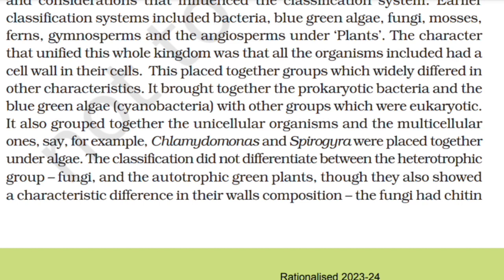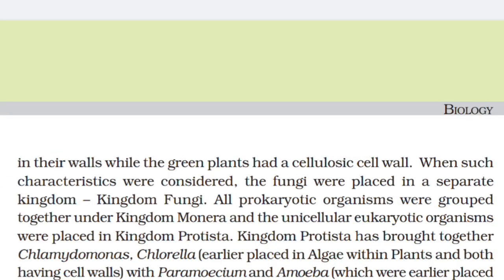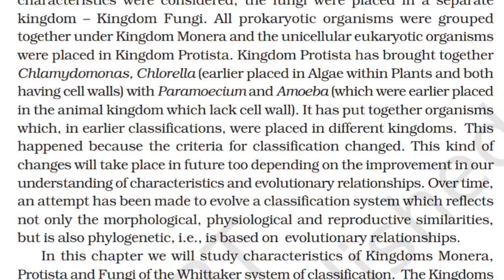The classification did not differentiate between the heterotrophic group fungi and the autotrophic green plants, though they also showed differences in wall composition — fungi had chitin in their walls while green plants had a cellulosic cell wall. When such characteristics are considered, fungi were placed in a separate kingdom. Prokaryotic organisms were grouped under kingdom Monera and unicellular eukaryotic organisms were placed in kingdom Protista. Kingdom Protista brought together Chlamydomonas and Chlorella with Paramecium and Amoeba, placing organisms that earlier classifications had put in different kingdoms together. This happened because the criterion for classification changed.